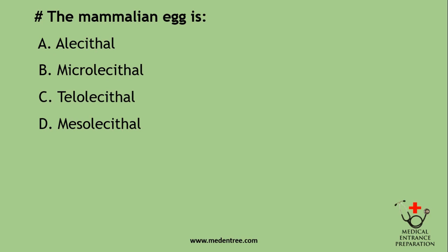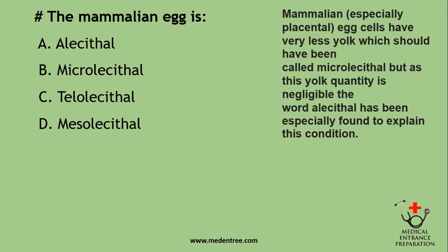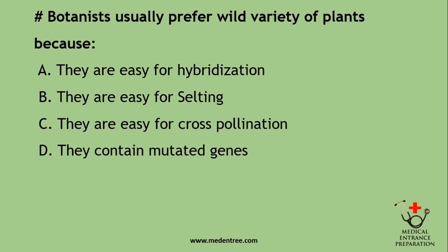The mammalian egg is: alecithal, microlecithal, telolecithal, or mesolecithal? The correct answer is alecithal. Mammalian eggs, especially placental eggs, have very little yolk, which would technically be called microlecithal, but as the quantity is negligible, the term alecithal is used to describe this condition. If alecithal is not an option, you can choose microlecithal.